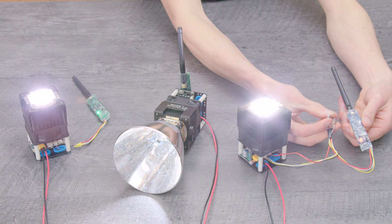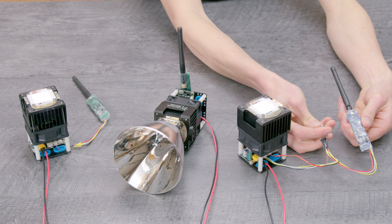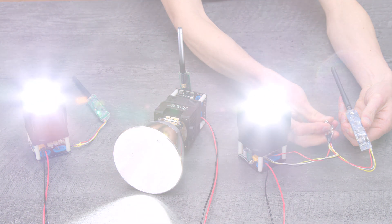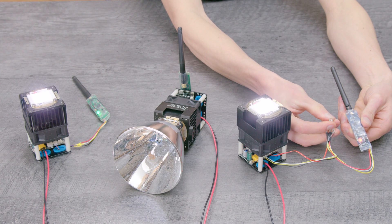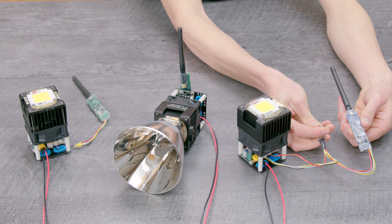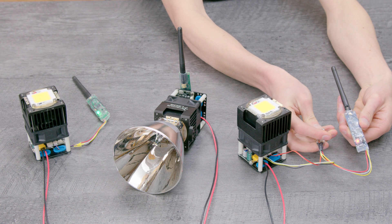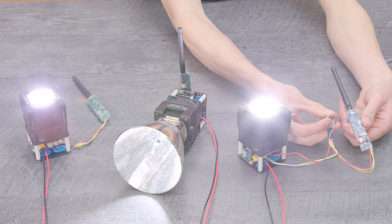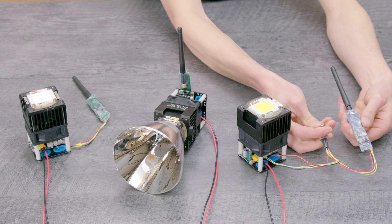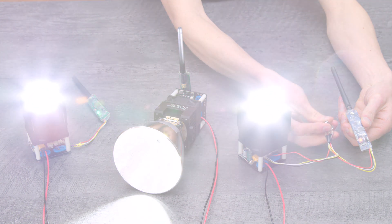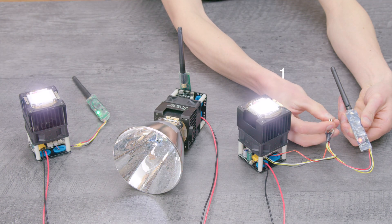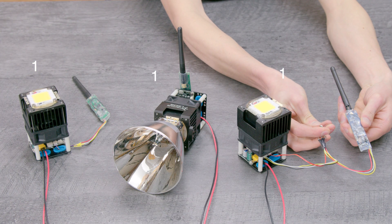To demonstrate that this works with any input method, we've attached a potentiometer to the analog input pin on the primary LumiBoost. As you can see, the primary LumiBoost is converting the analog signal into a DMX signal and sending it out to the other LumiBoosts via the DMX transceivers. In this case, there is only one channel being input and output, so all the other LumiBoosts will need to be on DMX channel 1.